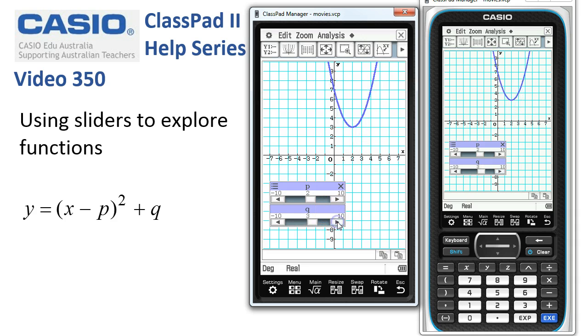If I tap to increase q, we can watch the function go up. And as I tap to decrease q, we can watch it go down. And so we get this sort of relationship between these variables and the position of the parabola.